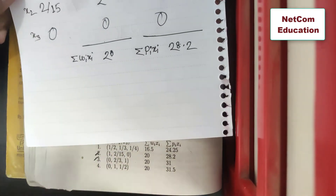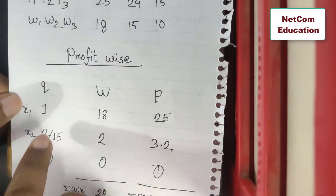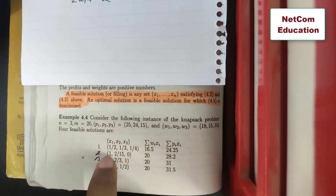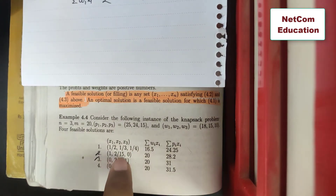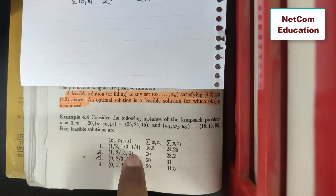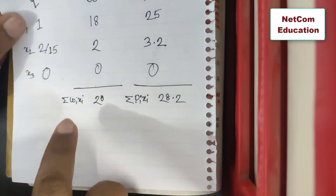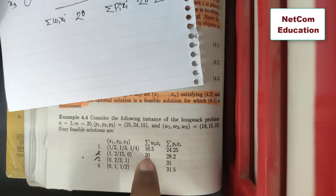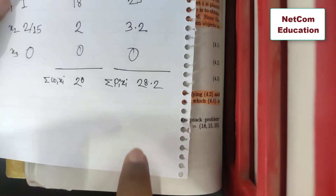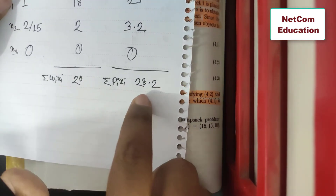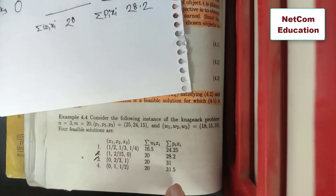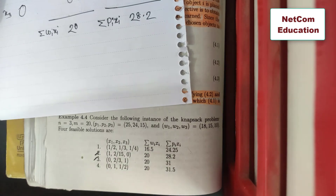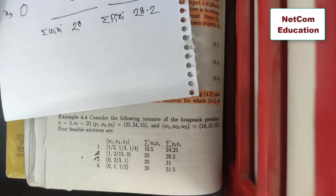Let's say the quantity is 1, 2 by 15, and 0. W_i * x_i and P_i * x_i gives a profit of 28.2.